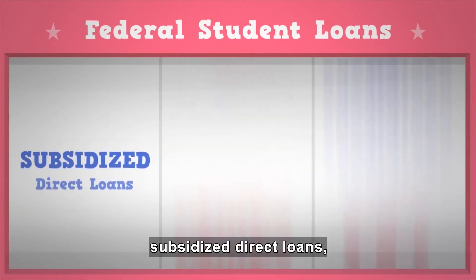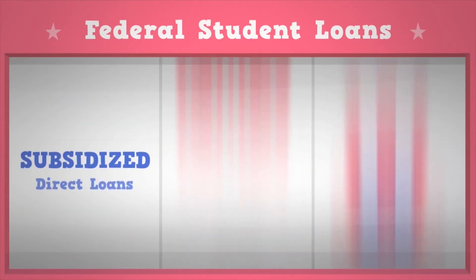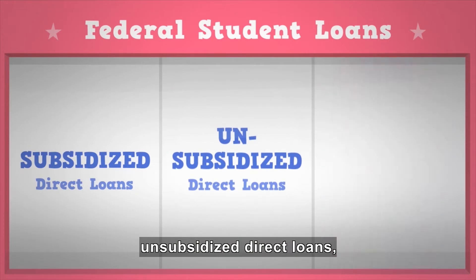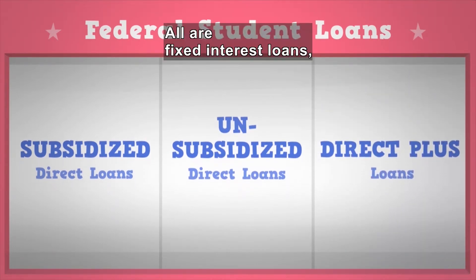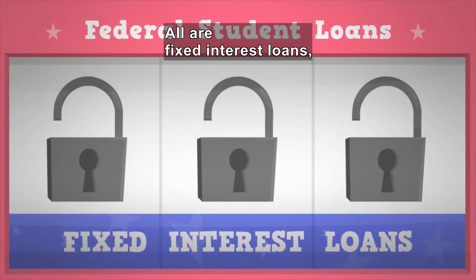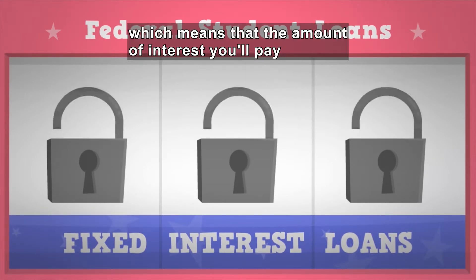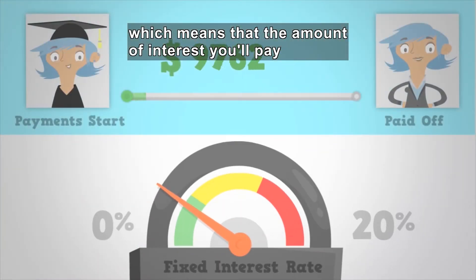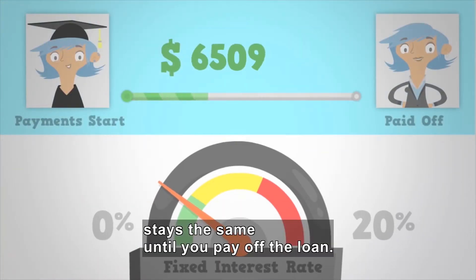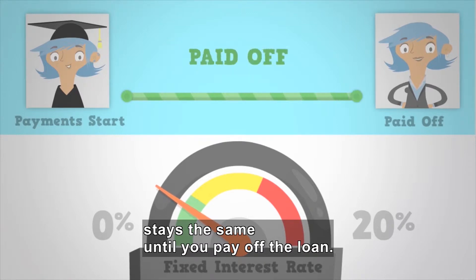Subsidized Direct Loans. Unsubsidized Direct Loans. And Direct Plus Loans. All three are fixed interest loans, which means that the amount of interest you'll have to pay stays the same until you pay off the loan.